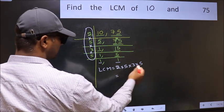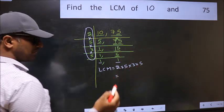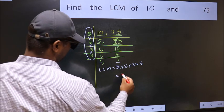When we multiply these numbers, we get 150.